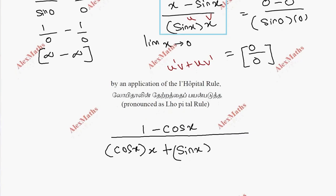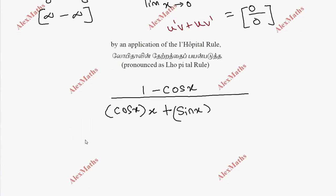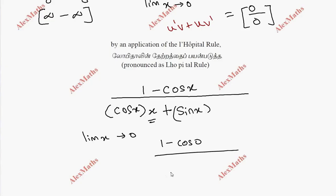Now we substitute the limit x→0. We get (1 - cos 0) divided by (cos 0 · 0 + sin 0 · 1). Cos 0 is 1, so 1 minus 1 = 0 in the numerator, and the denominator is also 0. So we still have 0/0, another indeterminate form.